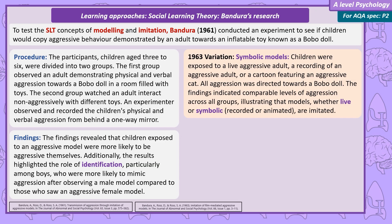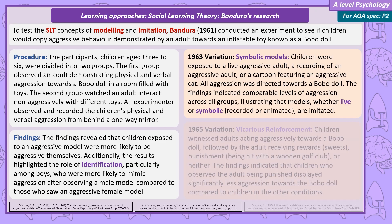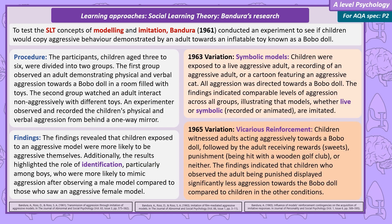In a 1963 variation, children watched either an aggressive adult, a recording of an aggressive adult, or a cartoon of an aggressive cat. All of the models demonstrated aggressive behavior to the Bobo Doll. The results showed similar levels of aggression for all three groups, demonstrating that symbolic models are imitated. In a 1965 variation, Bandura demonstrated the power of vicarious reinforcement and punishment. Children observed adults being aggressive towards a Bobo Doll and then either given rewards in the form of sweets, punishment by being hit with a wooden golf club, or no reward or punishment. Bandura found that the children who had seen the adult punished were far less aggressive to the Bobo Doll than their reward or control condition.